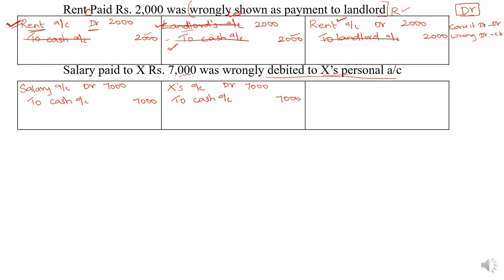Here again the credit entry is correct — both show 'to cash.' So we only need to rectify the debit. The correct debit will again be debited: salary account debit, rupees 7,000. The wrong debit will be credited: to X account, rupees 7,000. This cancels the wrong X debit, leaving the correct entry: salary account debit to cash account.